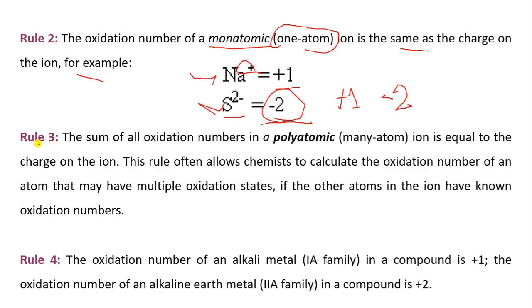Now rule 3. The sum of all oxidation numbers in a polyatomic ion is equal to the charge on the ion. This rule often allows a chemist to calculate the oxidation number of an atom that may have multiple oxidation states, if the other atoms in the ion have known oxidation numbers.